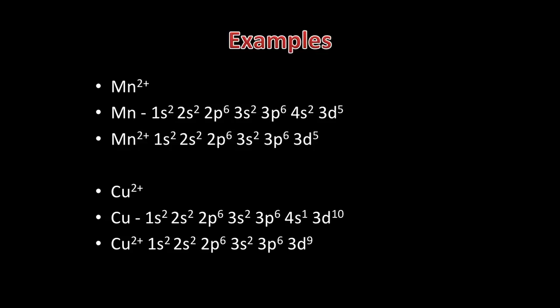Another example is the Cu2+ ion. A copper atom has the configuration 1S2, 2S2, 2P6, 3S2, 3P6, 4S1, 3D10. Copper has lost two electrons — the first one is taken from the 4S subshell and then the second one is taken from the 3D subshell. So the electron configuration is 1S2, 2S2, 2P6, 3S2, 3P6, 3D9.